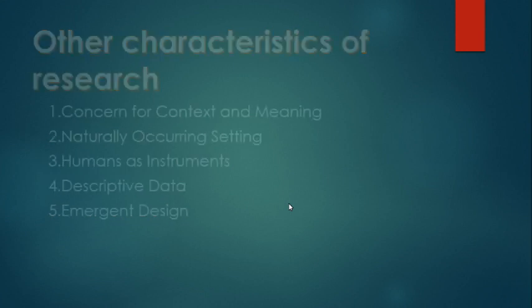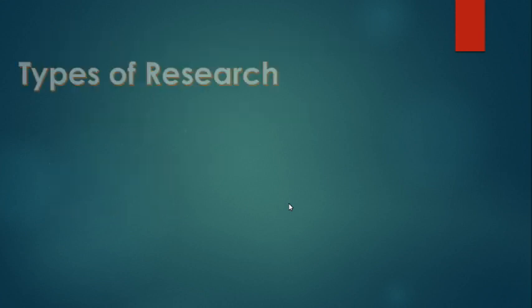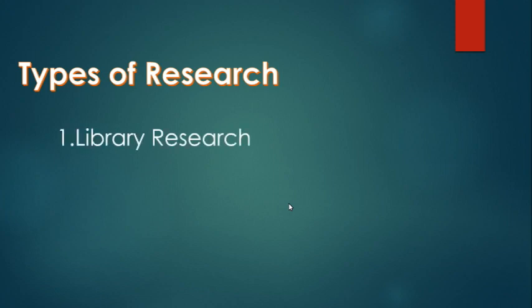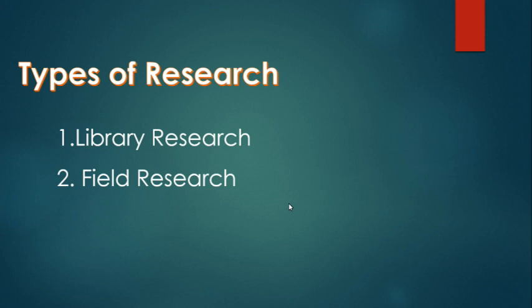So there are three types of research. Number one: Library research. This type is done primarily in the library where answers to specific questions or problems are available. Number two: Field research. The research is done in natural settings such as a barangay, school, or factory.